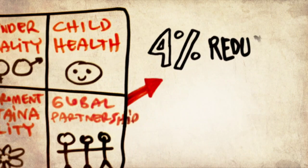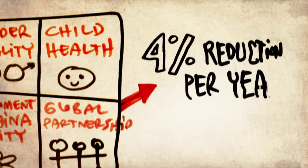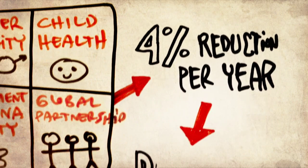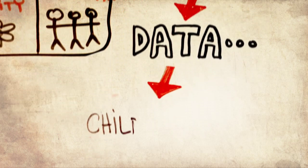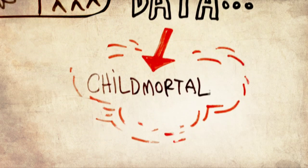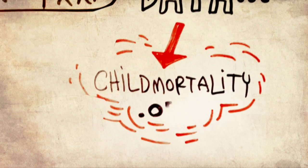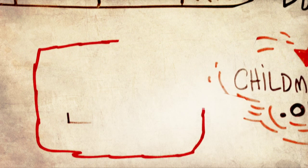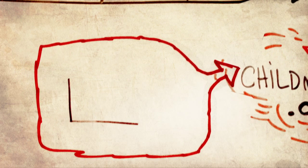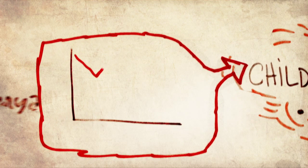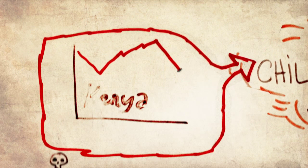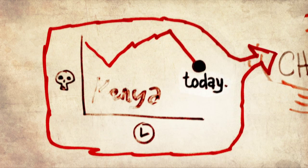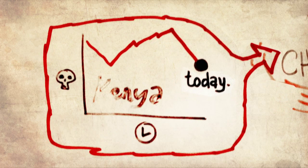There's a second reason I like these development goals, and that is because each and every one is measured. Take child mortality. The aim here is to reduce child mortality by two-thirds from 1990 to 2015. That's a 4% reduction per year.